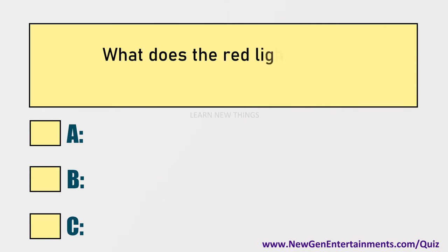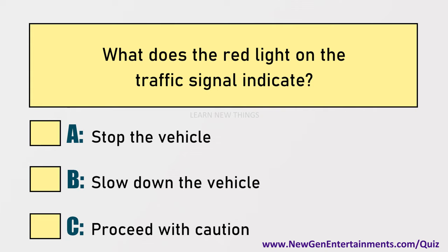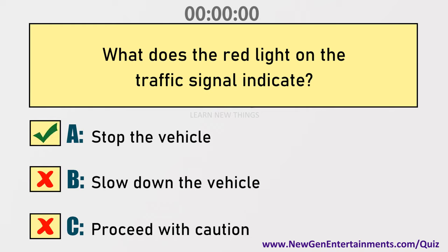What does the red light on the traffic signal indicate? Options are: A) Stop the vehicle, B) Slow down the vehicle, C) Proceed with caution. Answer: Option A, Stop the vehicle.